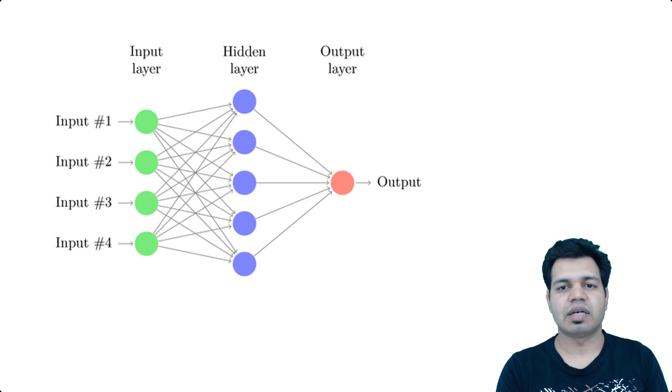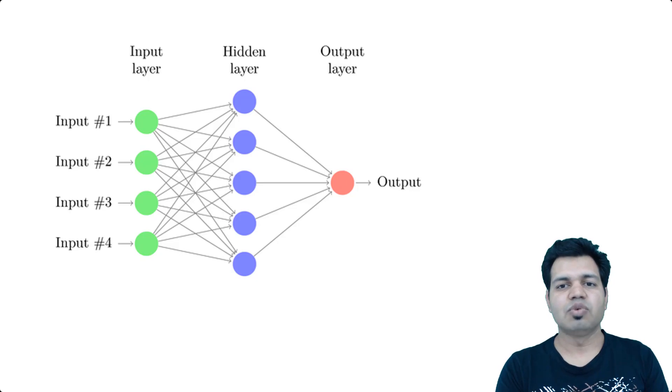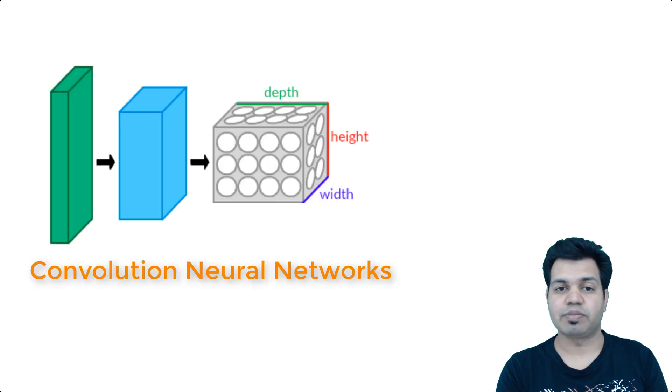Next, I will cover neural networks, where I will provide an understanding of various building blocks of neural networks, like neurons and layers. I will then move ahead covering neural network architectures like convolutional neural networks for image processing.